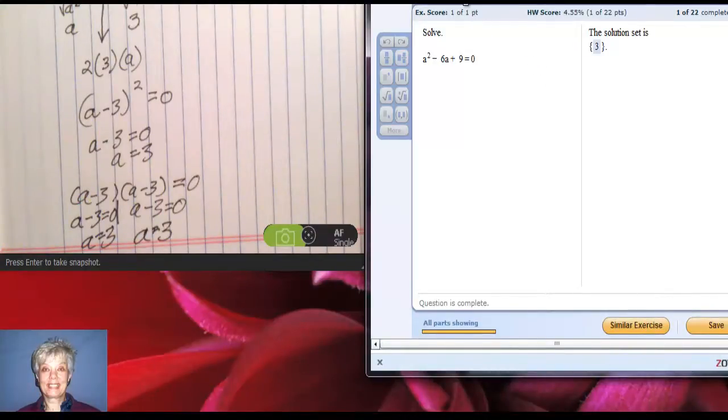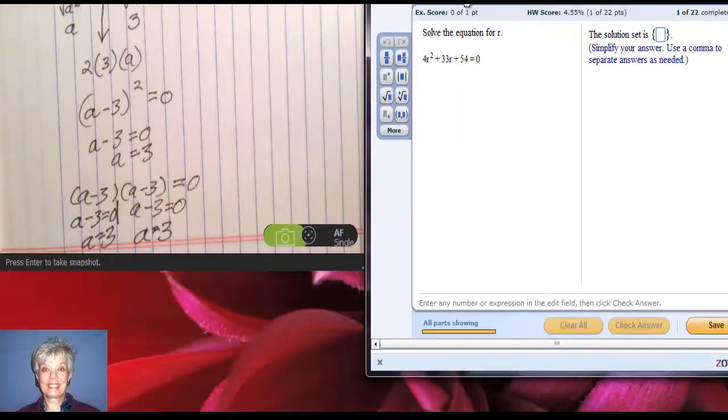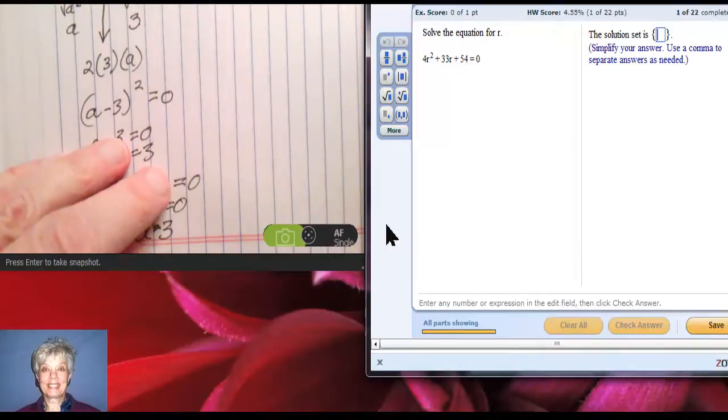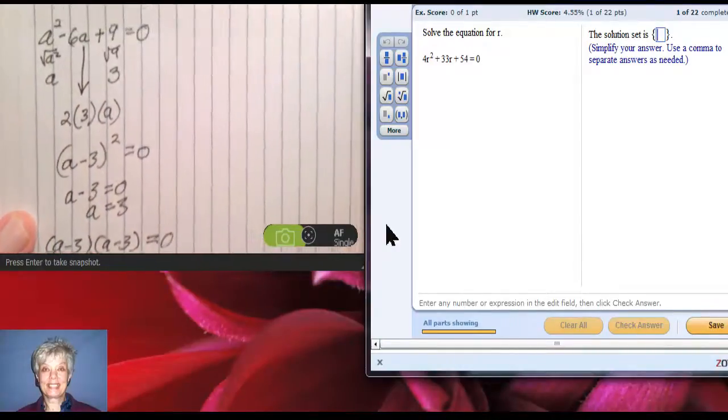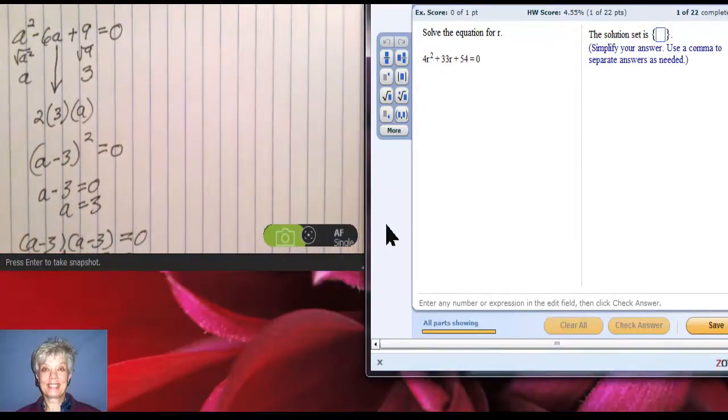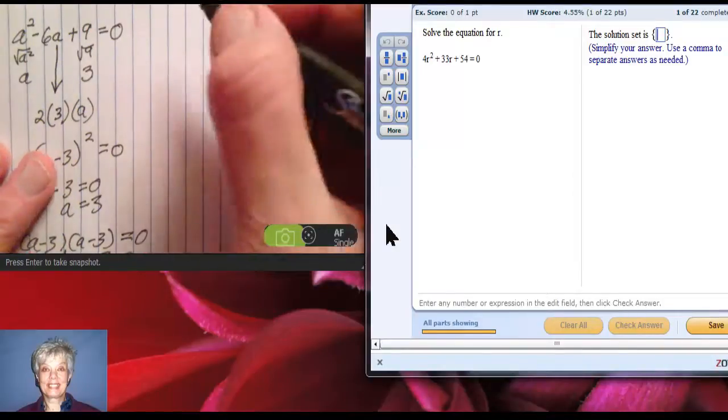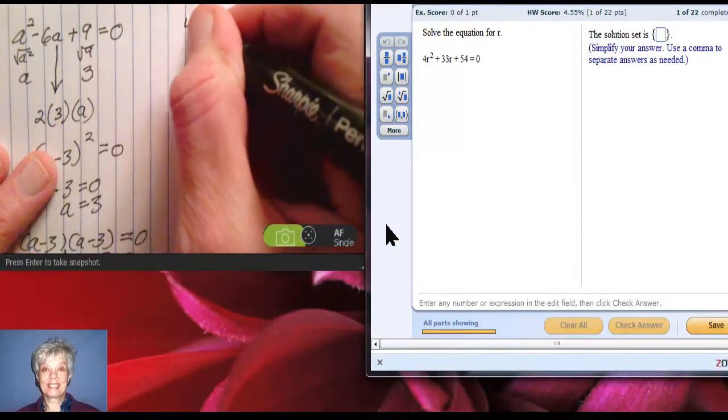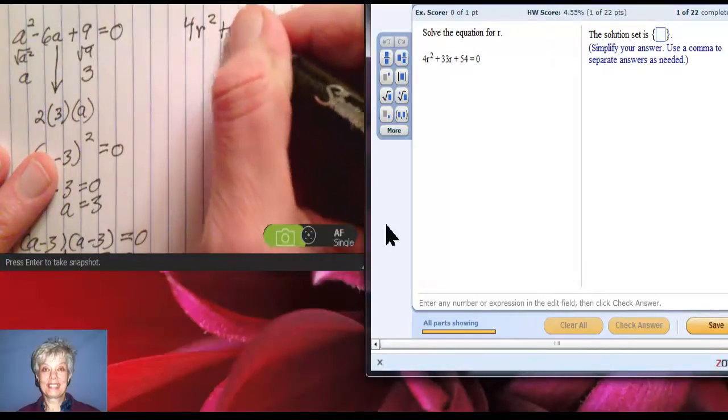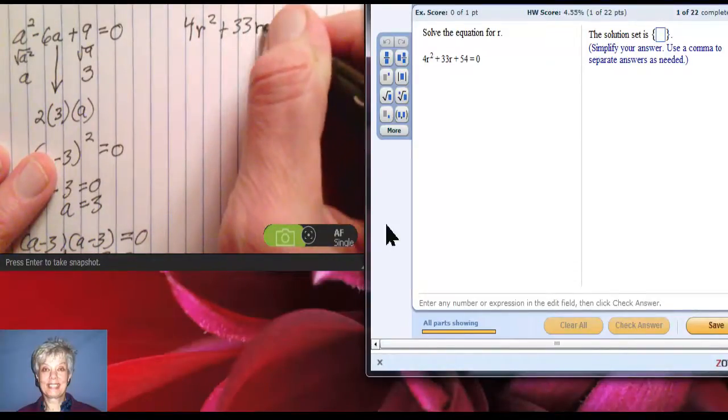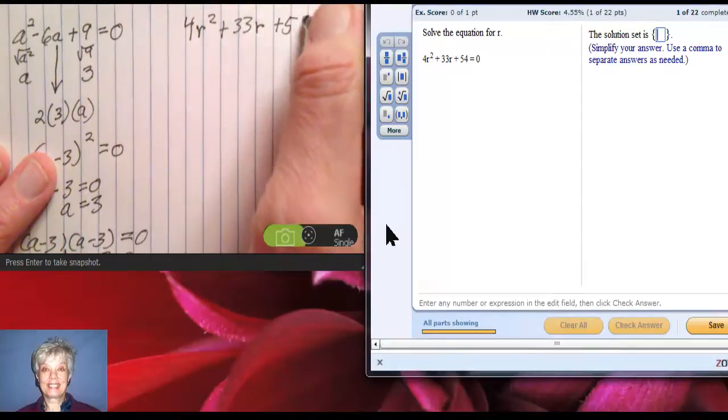Okay, I'm going to go on to problem 2. All right, it looks like a more complicated factoring by grouping. Okay, but now we've got a quadratic. We're going to factor it by grouping. And it's 4r² + 33r + 54 = 0.